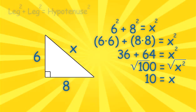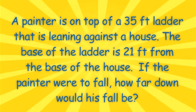Now let's try a word problem. A painter is on top of a 35 foot ladder that is leaning against a house. The base of the ladder is 21 feet from the base of the house. If the painter were to fall, how far down would his fall be?